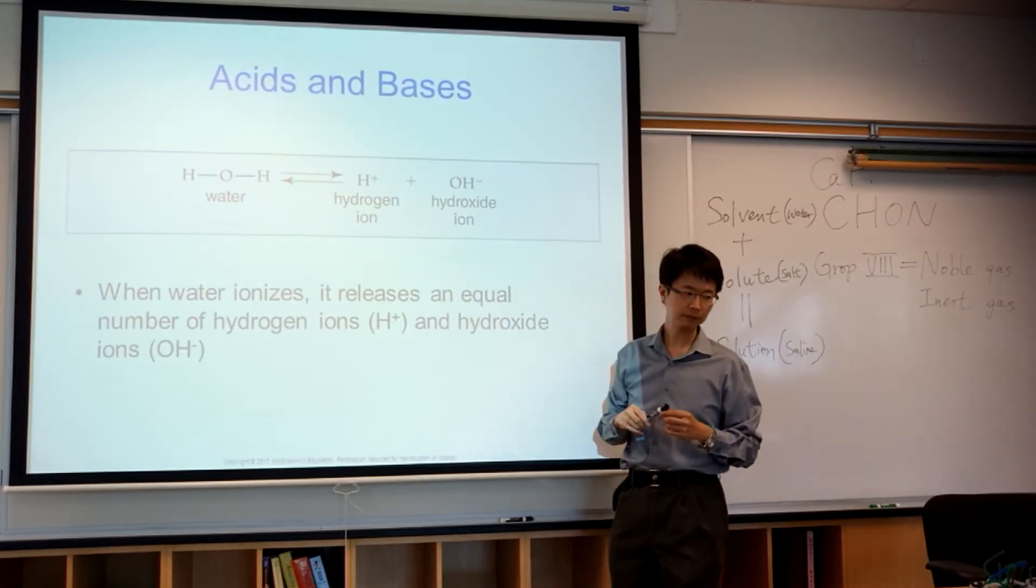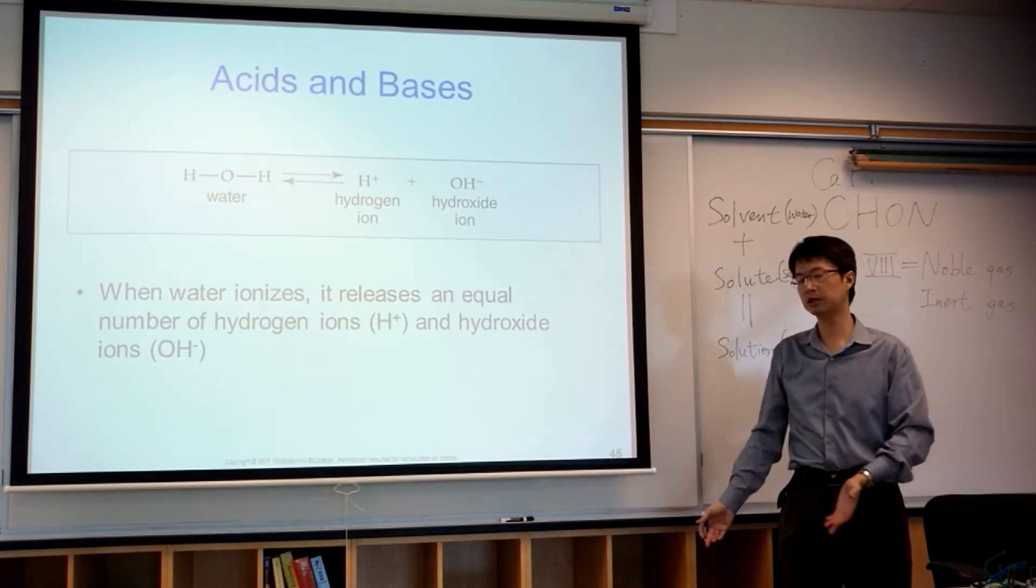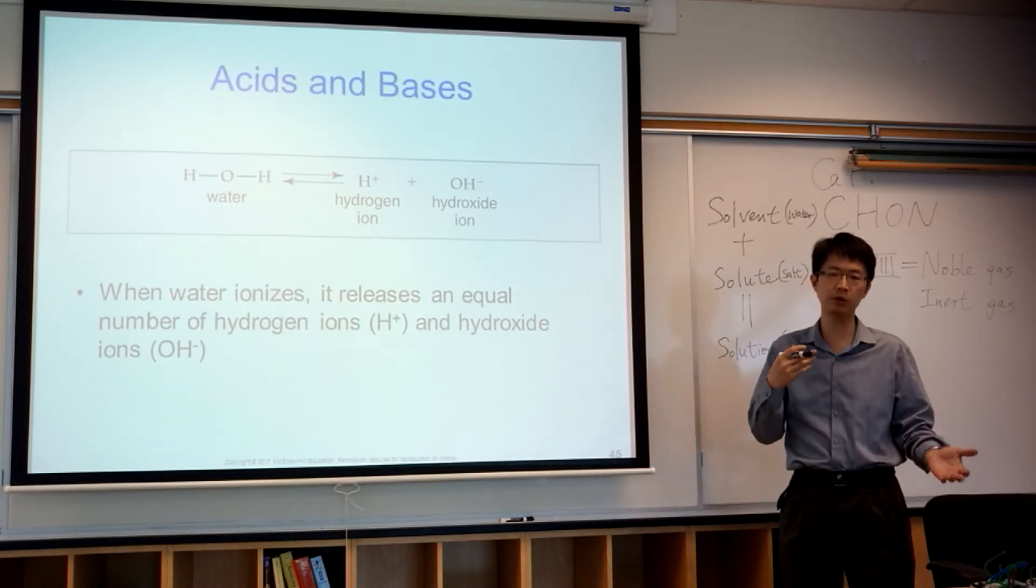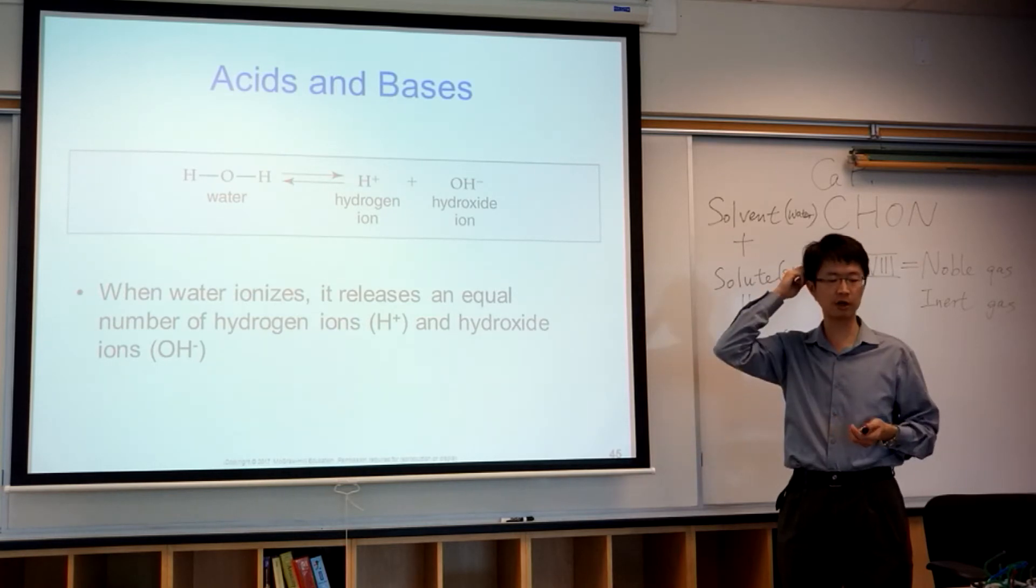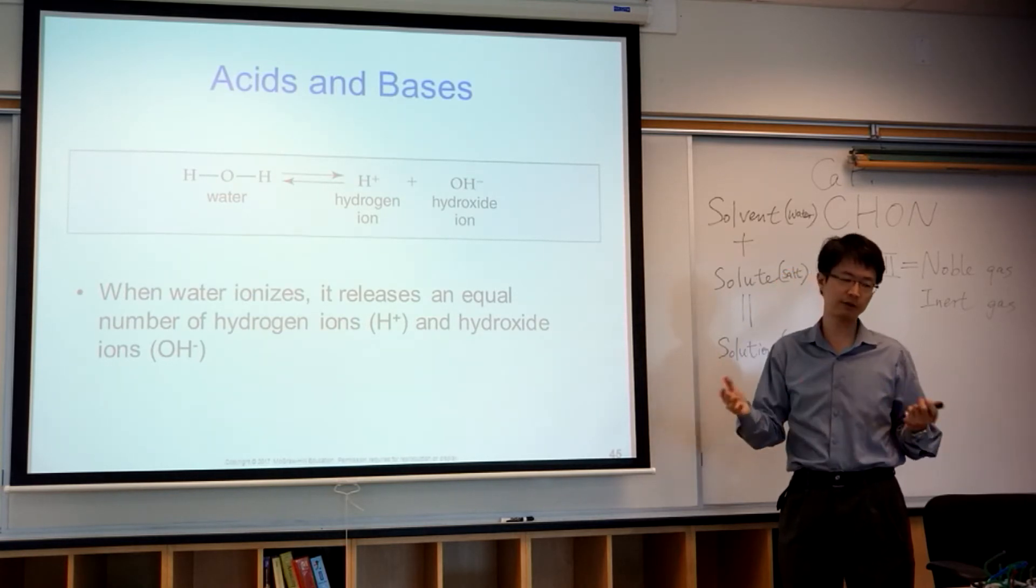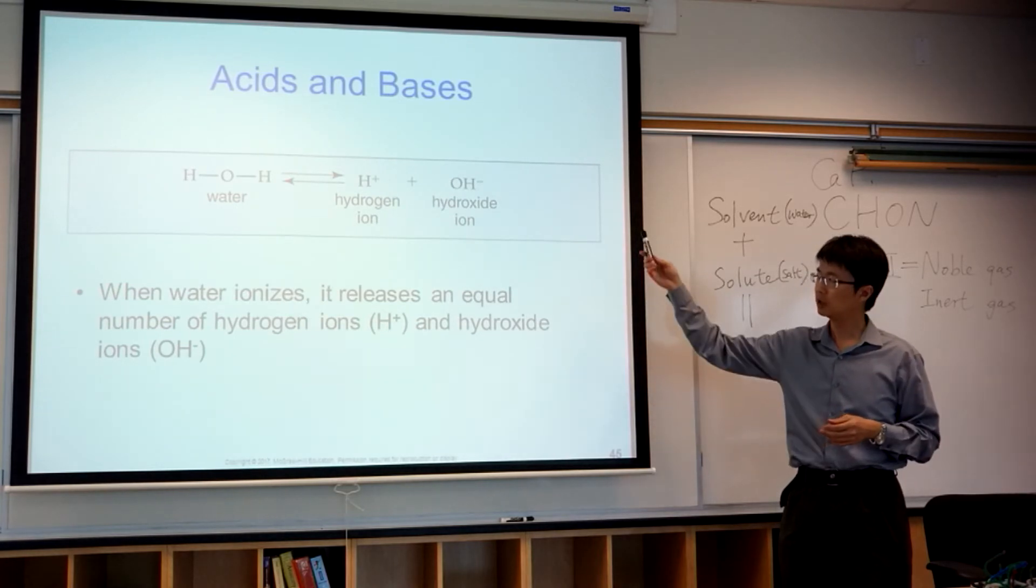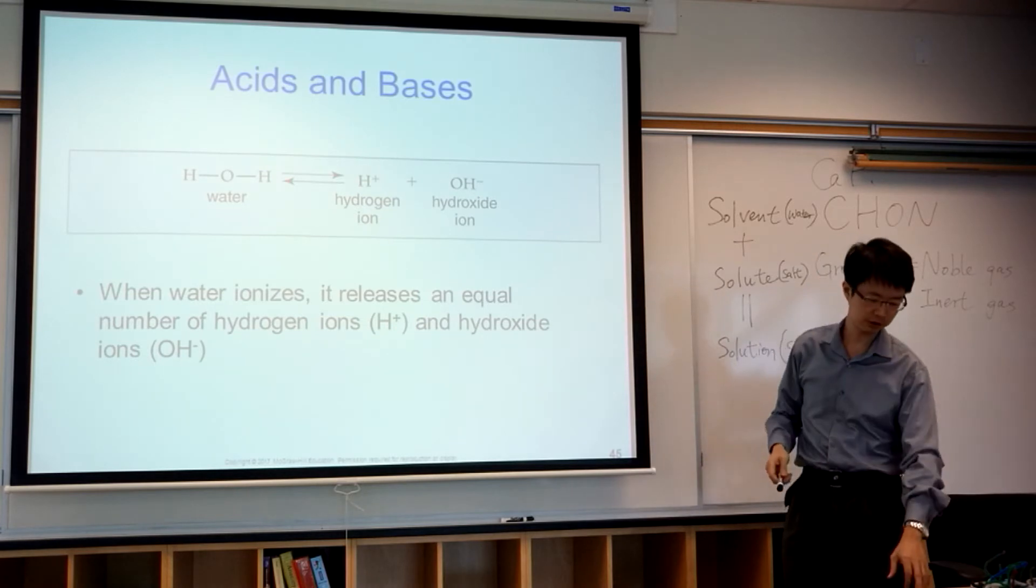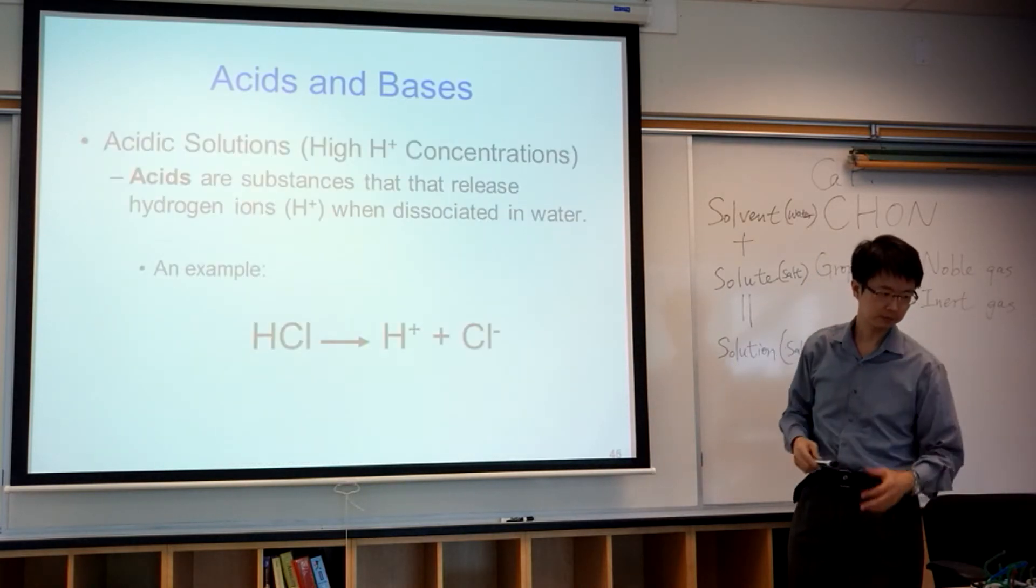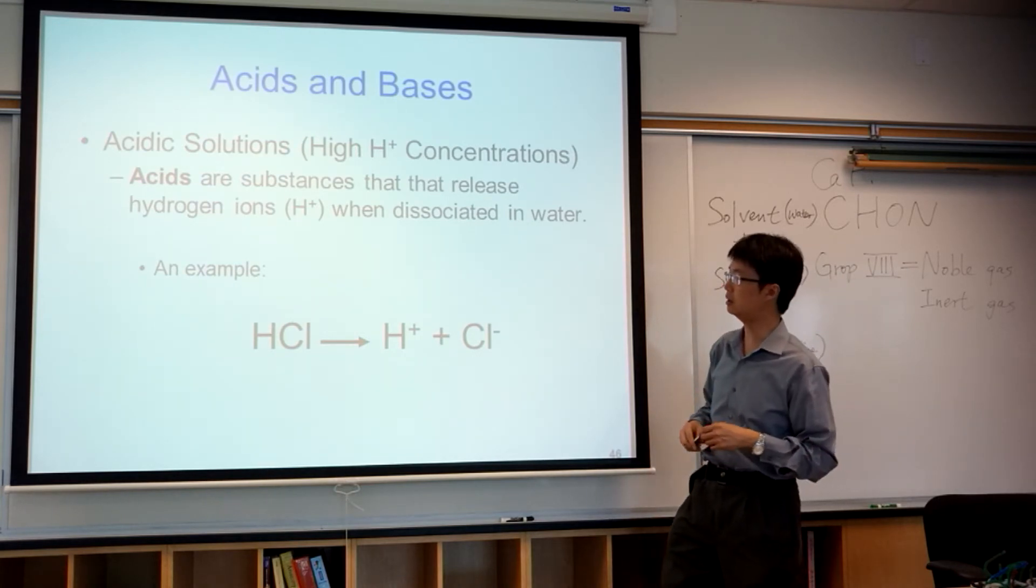When you have acid and base together, you will form neutral water. So neutrality is basically the balance between acid and base. It's like Chinese philosophy - the harmony of the universe is based on the balance of yin and yang, the balance of acid and base form the neutral solution. An acidic solution or acid is a substance that releases hydrogen ion.